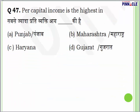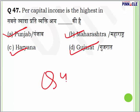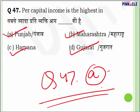Question 47: Per capita income is the highest in which state in India? Options are Punjab, Haryana, Maharashtra or Gujarat. Answer — Punjab has the highest per capita income.